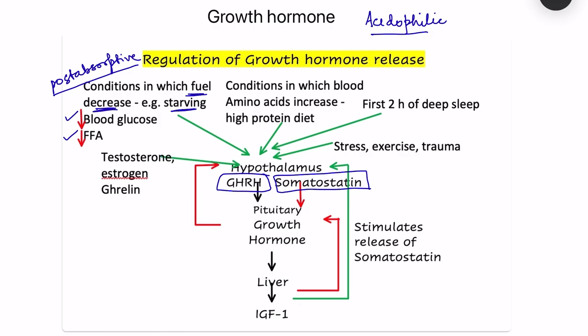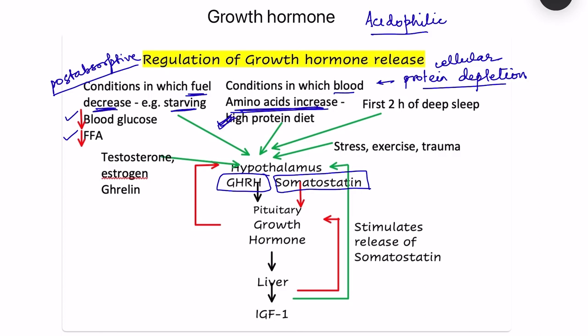Another important stimulus is an increase in blood amino acids, which also increases GHRH. This occurs in protein depletion — as in chronic starvation with excessive protein breakdown — and also in a high protein diet, where absorbed amino acids rise. In both cases, growth hormone releasing hormone increases.